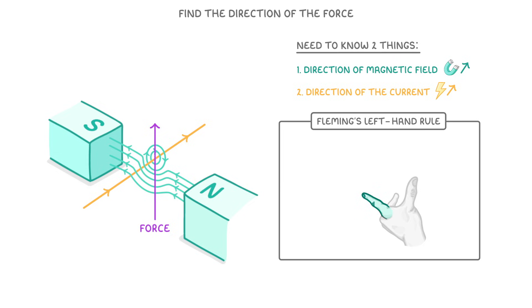Your first finger is meant to represent the direction of the magnetic field, so point it from the north to the south pole. Then you place your second finger in the direction of the current, and whichever way your thumb now points will be the direction of the force felt by the wire.